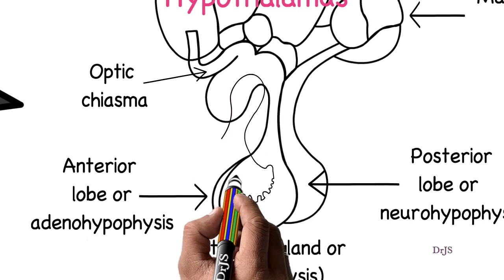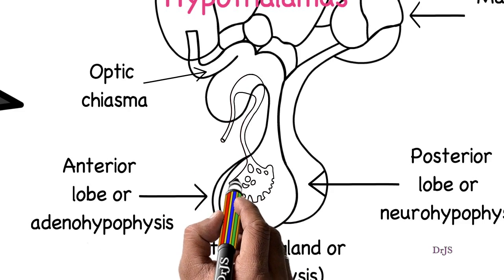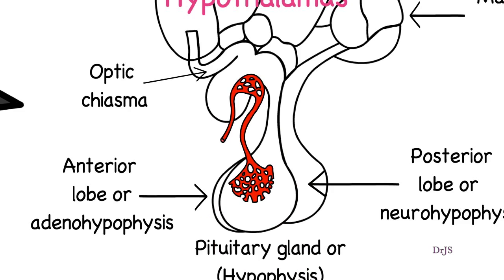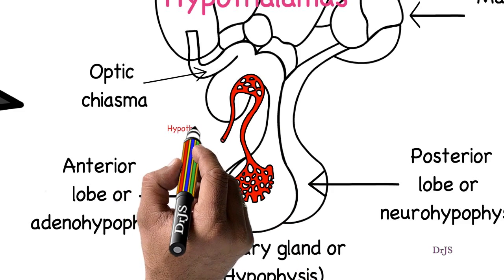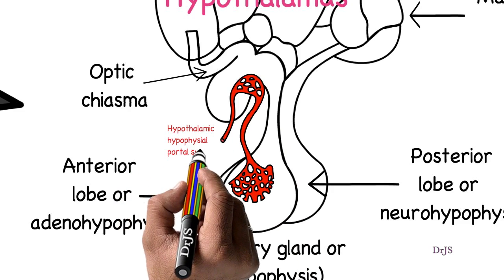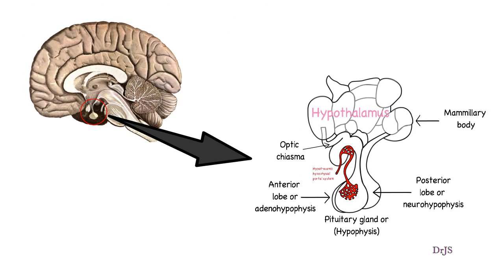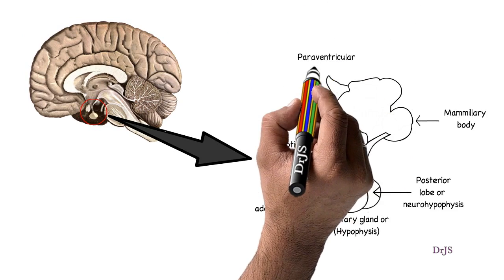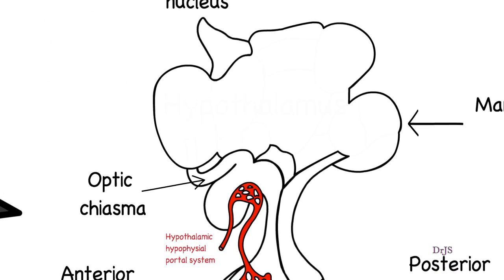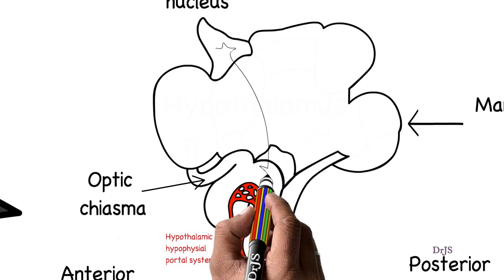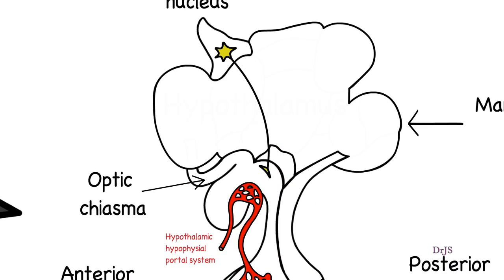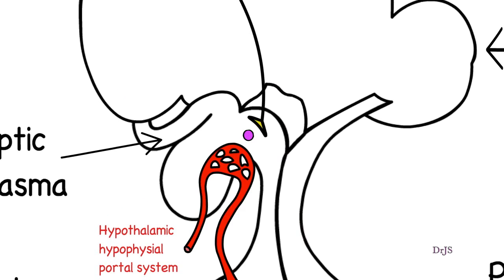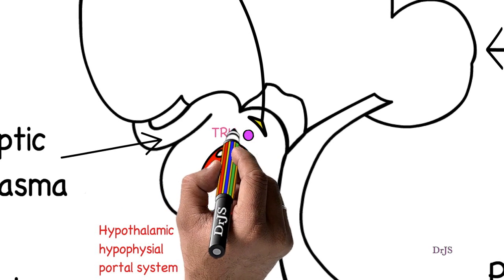There is a network of blood vessels between the anterior lobe of the pituitary gland and the base of the hypothalamus. This is called the hypothalamic-hypophysial portal system. The nerve endings of the paraventricular nuclei in the hypothalamus secrete thyrotropin releasing hormone or TRH into the portal system. TRH is then transported into the anterior pituitary via this portal system.